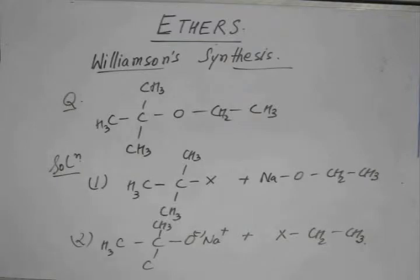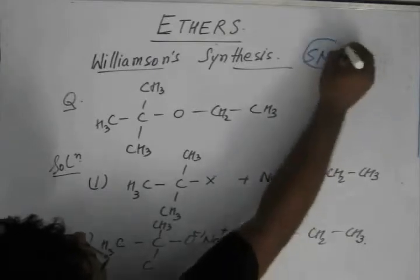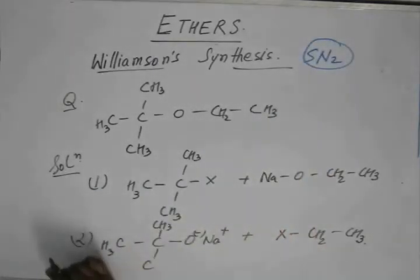By the knowledge of SN1 and SN2, we know that if the substrate has a 3-degree alkyl halide, it is very difficult to substitute a nucleophile on a 3-degree substrate if it is an SN2 reaction. As Williamson synthesis is undergoing an SN2 reaction.